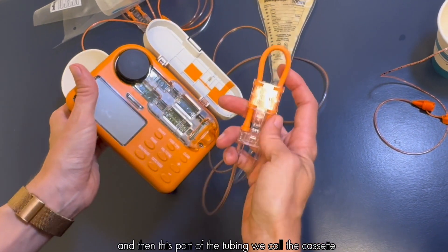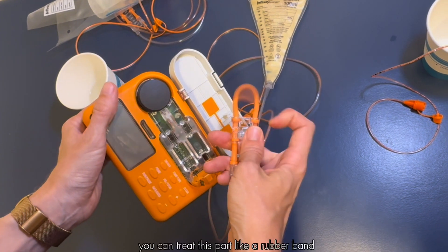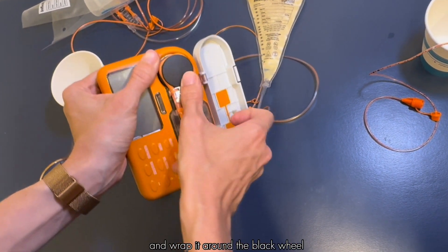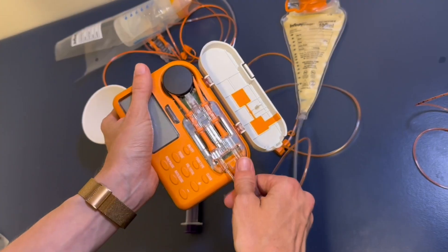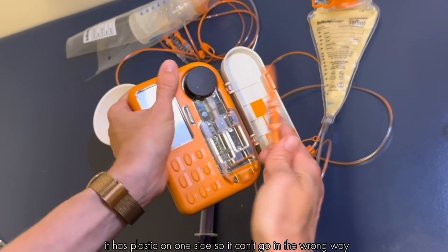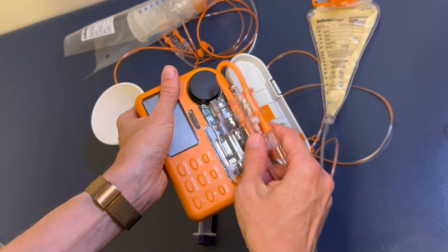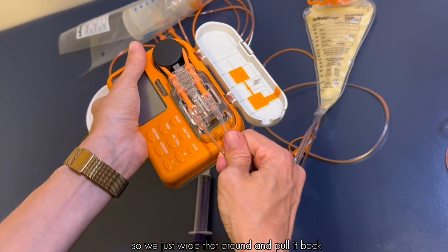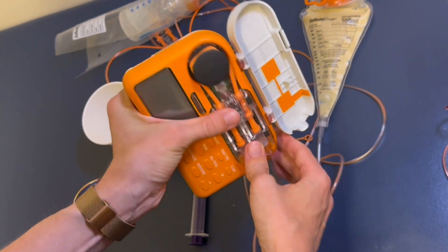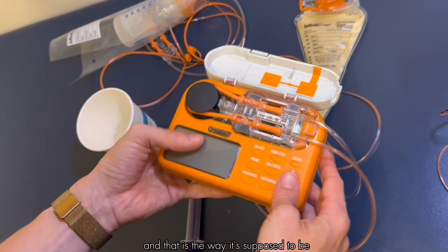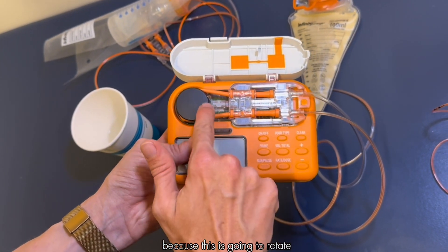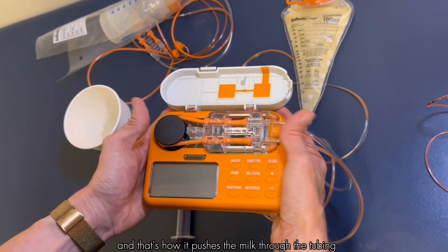This part of the tubing we call the cassette. You can treat this part like a rubber band and wrap it around the black wheel and then pull on these tubes to stretch it back and it will snap into place. It has plastic on one side so it can't go in the wrong way. Sometimes people ask if it's supposed to be tight here on the wheel and that is the way it's supposed to be because this is going to rotate and that's how it pushes the milk through the tubing.